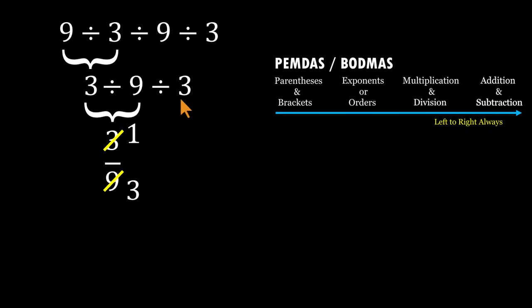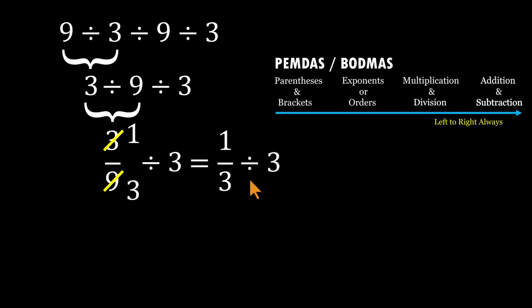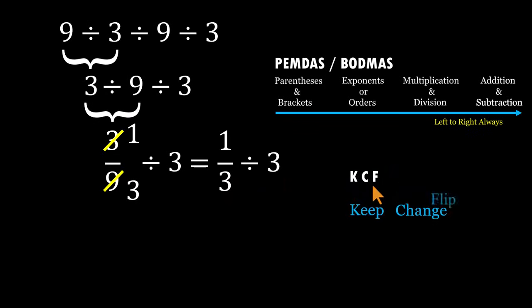Cancel the common factor of 3 on top and bottom, and we're left with 1 over 3. Bring the last 3 down. Now we have 1 third divided by 3. Since fractions are involved, we use the KCF rule — Keep, Change, Flip.